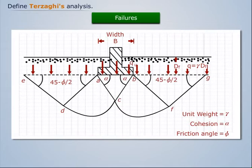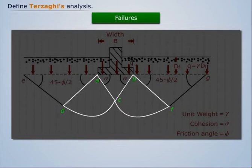Zone ABC is located under the bottom of the foundation. Zones ACD and BCF are Prandtl's radial shear zones. Zones ADE and BFG are the Rankine passive pressure zones.